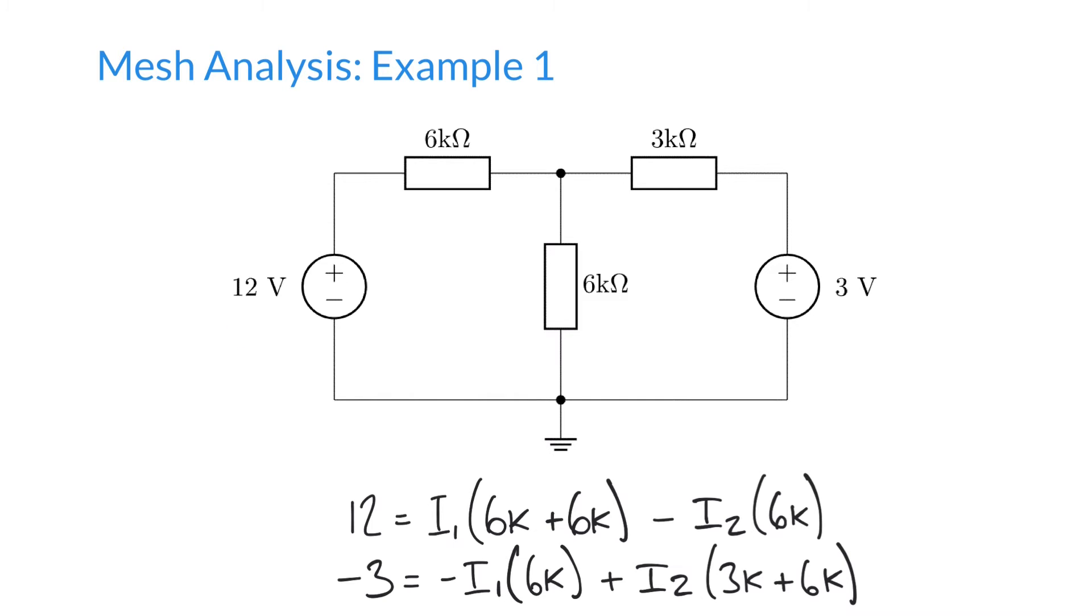So we have for our first pane here, we have 12 volts being equal to I1 times 6k plus 6k because we have a current, I'll mark that on here, current I1 in this pane here flowing through those two components minus I2 over here flowing upwards through this 6k resistor in the middle.